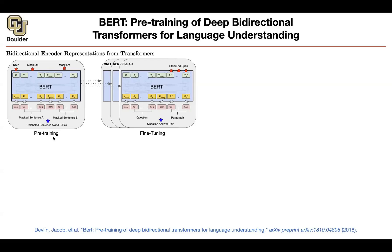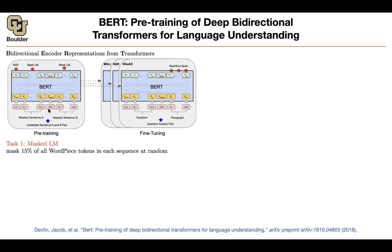Previously, the loss function was an autoregressive loss function — given the previous words, predict the next word. Here it's a little bit different. You're going to take your input and mask 50% of the tokens that you have at random, so you're just going to mask them out.